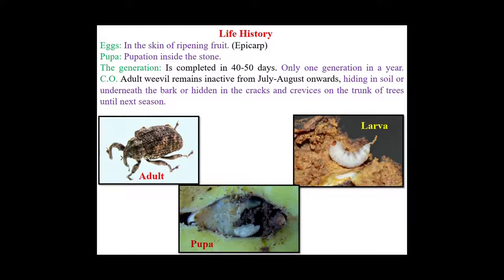Life cycle of stone weevil: eggs are deposited in the skin of ripening fruit (epicarp). Pupation takes place inside the stone or nut. The life cycle is completed in 40 to 50 days with only one generation per year. The adult weevil remains inactive from July to August onwards, hiding in the soil, underneath bark, or in cracks and crevices on the trunk until the next season.